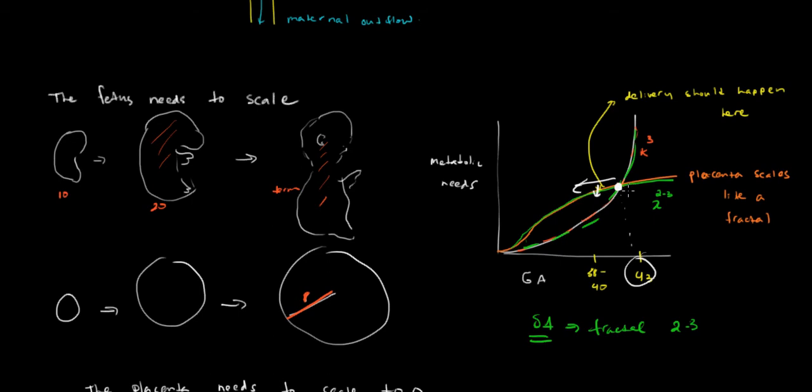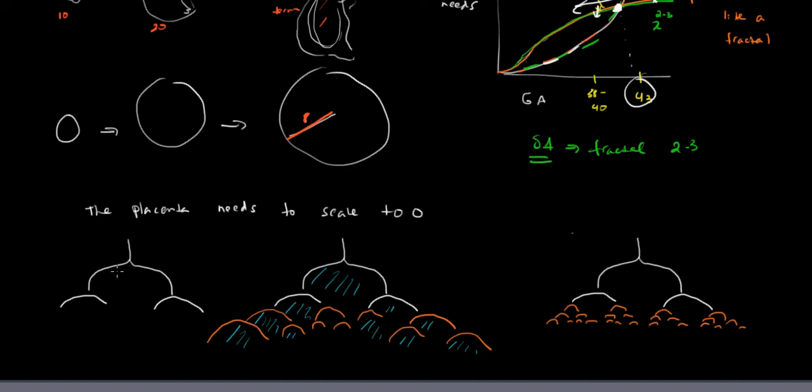The reason we have intrauterine fetal demise and trouble is because sometimes this intersection point is shifted and coming too close where labor hasn't come on. There's no biological mechanism to inherently couple this intersection point and the onset of labor. The fetus could adjust this curve by growing smaller. Sometimes he'll keep his head the same size but his body smaller. That's the growth pattern in IUGR. But all of that is reaction. The placenta scales up with a fractal function where the fetus scales up with an exponential function, so they're going to collide.